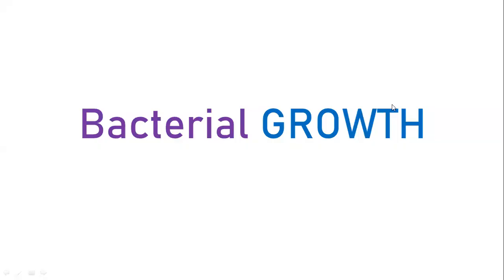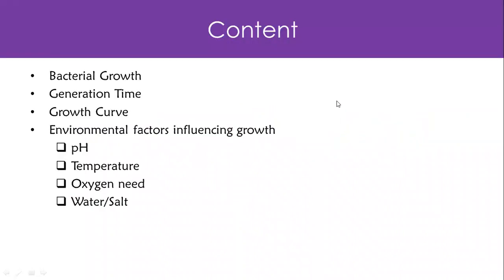Today we're going to look at bacterial growth — specifically, how fast bacteria grow, the generation time, and the overall process. We'll assume bacteria are growing in a controlled environment and look at the growth curve. We'll also examine environmental factors that influence growth, including pH, temperature, oxygen or lack of oxygen, and water and salt.